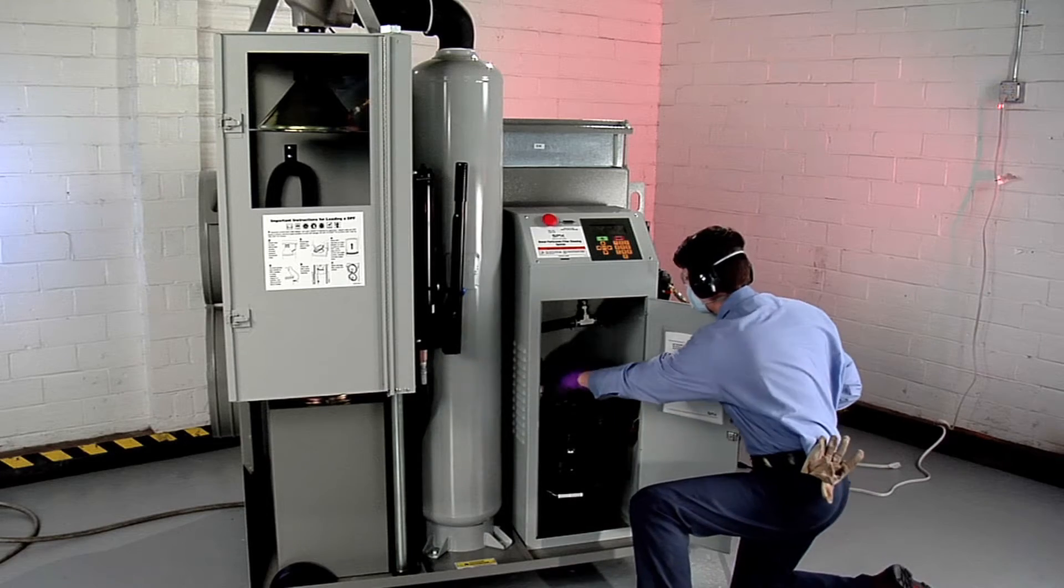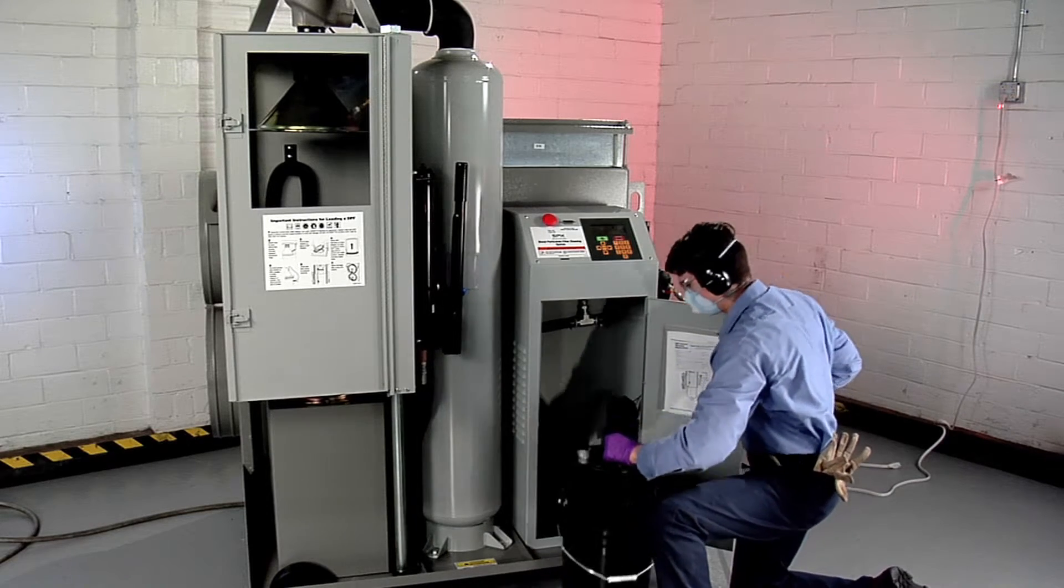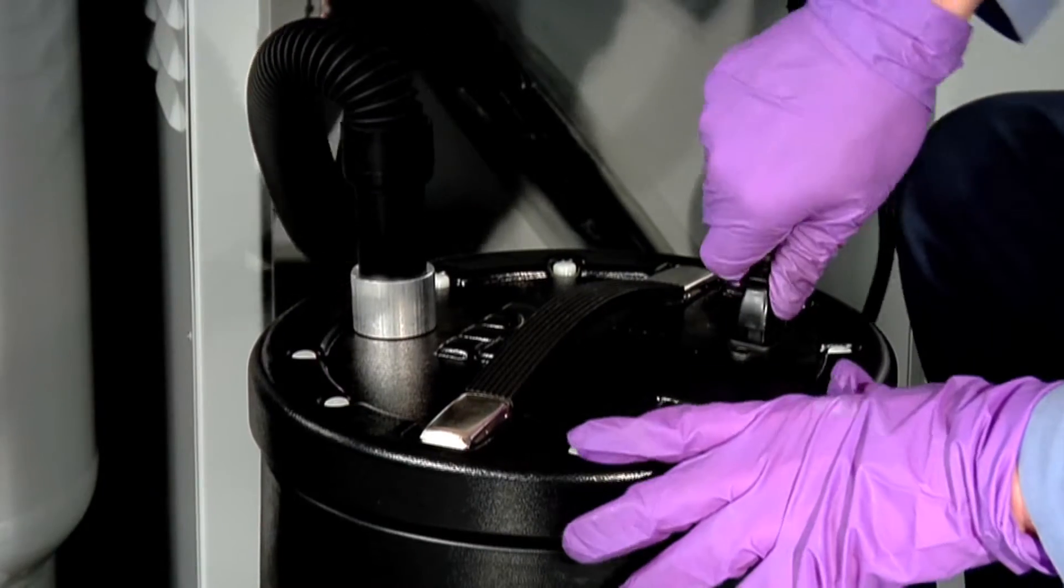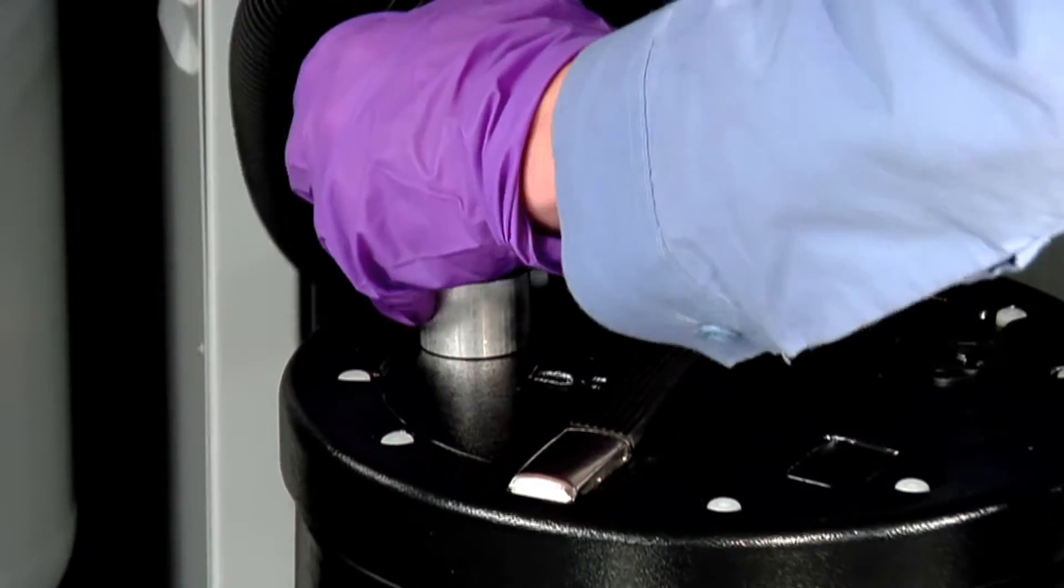Grasp the handle on top of the vacuum and lift it out of the cabinet. Disconnect the vacuum cleaner's power cord and vacuum hose.